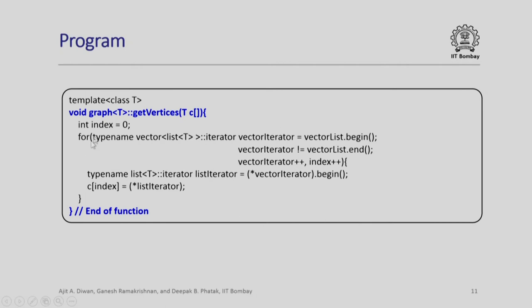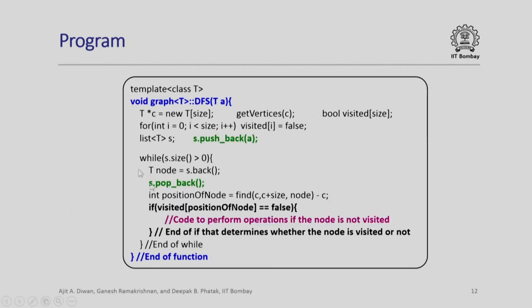Next, let us look at get vertices, we are already familiar with this, it will get all the vertices through the iteration. Next, let us look at DFS, this is the main depth first search function. Let us see what we are doing. We create a T class instance with this size that we have given, which we have got that is the total number of nodes. We get vertices.